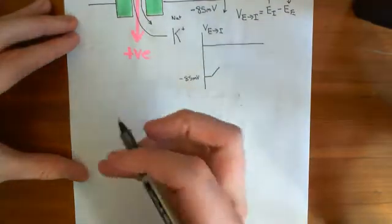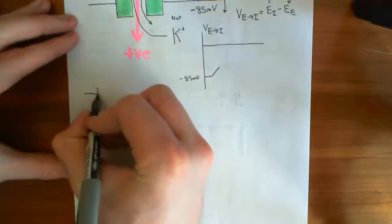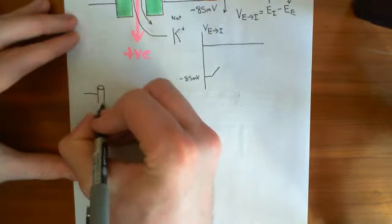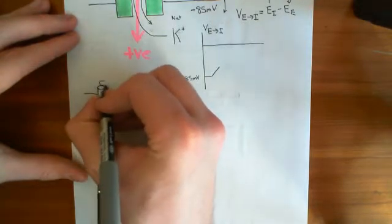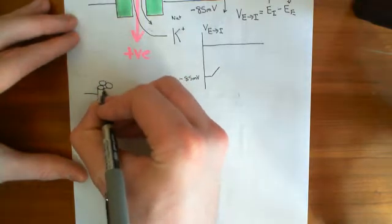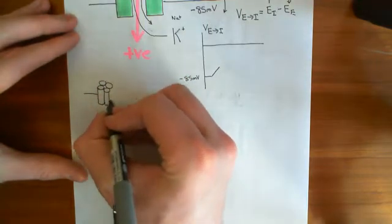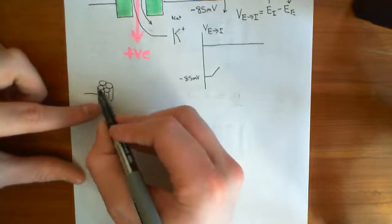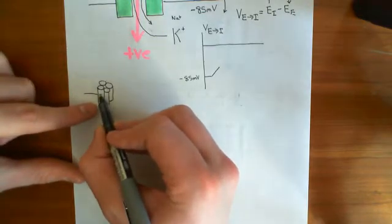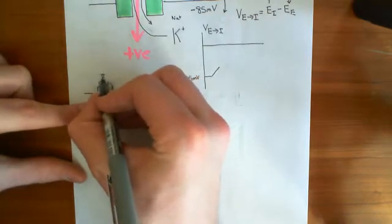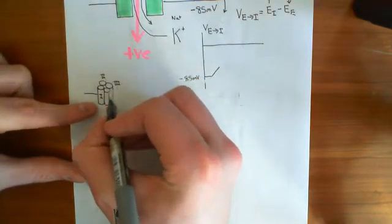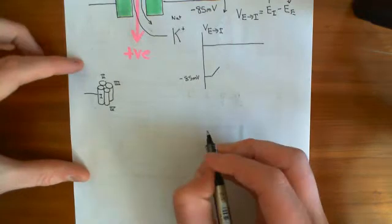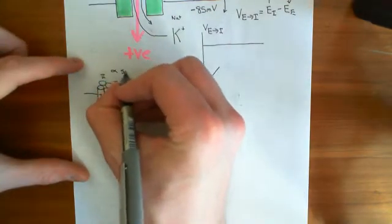Let's draw the voltage-gated sodium channels. Voltage-gated sodium channels have four domains; they are made up of a single polypeptide — at least the alpha subunit is. The polypeptide forms four domains. This is domain one, domain two back here, domain three, and domain four. It is one single protein that makes up all four of these domains, and this is known as the alpha subunit of the voltage-gated sodium channel.